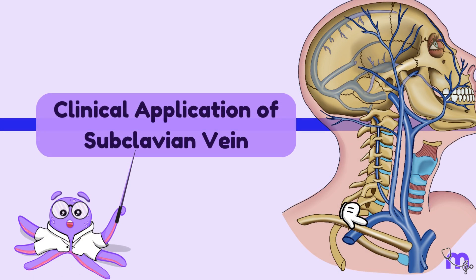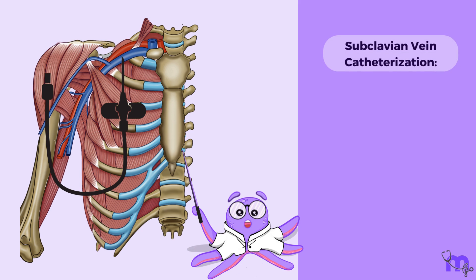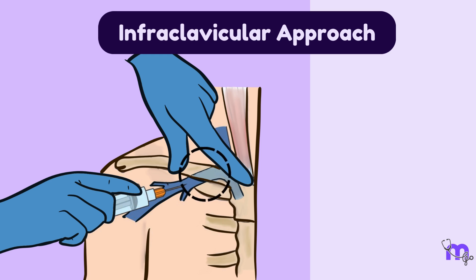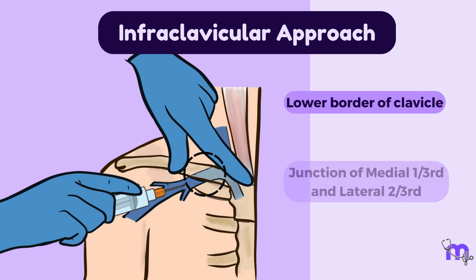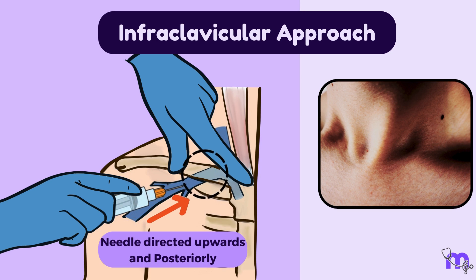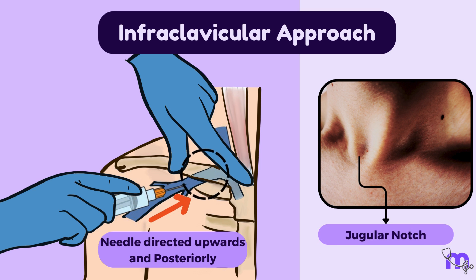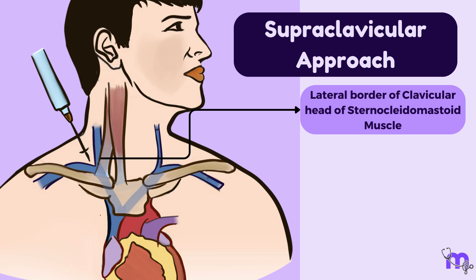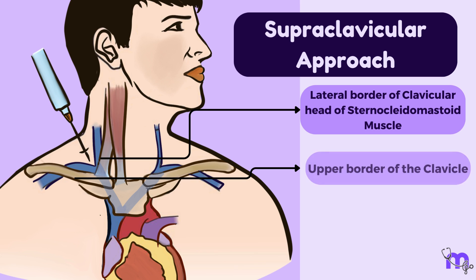Now let's consider some clinical applications related to the subclavian vein. Subclavian vein catheterization can be performed using two approaches: infraclavicular and supraclavicular. In the infraclavicular approach, a needle is inserted just below the lower border of the clavicle at the junction of its medial one-third and lateral two-thirds, then directed upwards and posteriorly towards the middle of the jugular notch. In the supraclavicular approach, the needle is inserted at the junction of the lateral border of the clavicular head of the sternocleidomastoid muscle and the upper border of the clavicle, then directed downwards and medially towards the mediastinum.